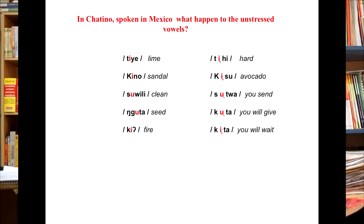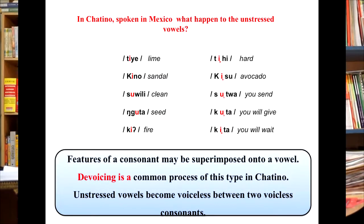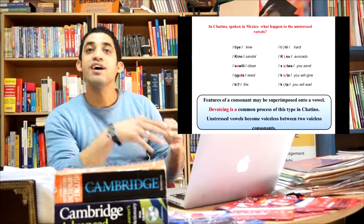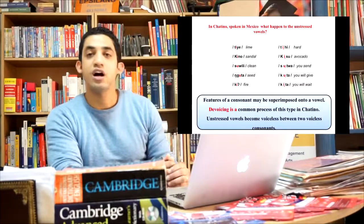Another common assimilatory process is devoicing. And here we can take the example of Chatino language spoken in Mexico. Look what happens to the unstressed vowel. Here, features of a consonant may be superimposed onto a vowel. In this language, in Chatino, unstressed vowels become voiceless between two voiceless consonants. What happens here, vowels, because they are voiced, they get devoiced whenever they are between two voiceless consonants.